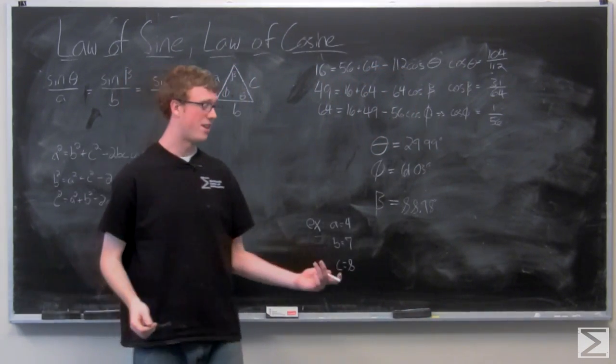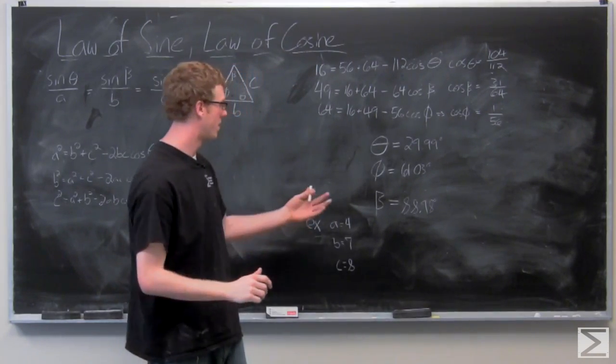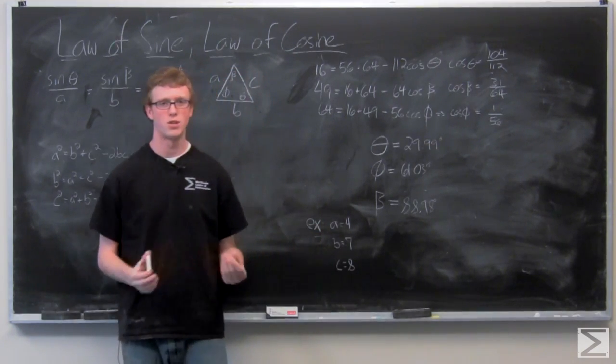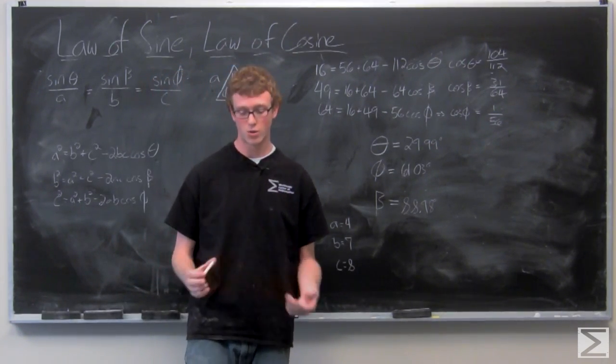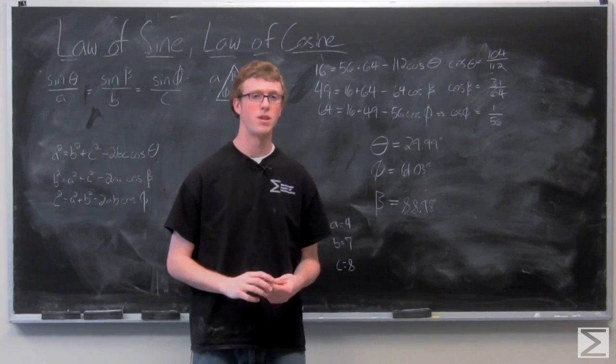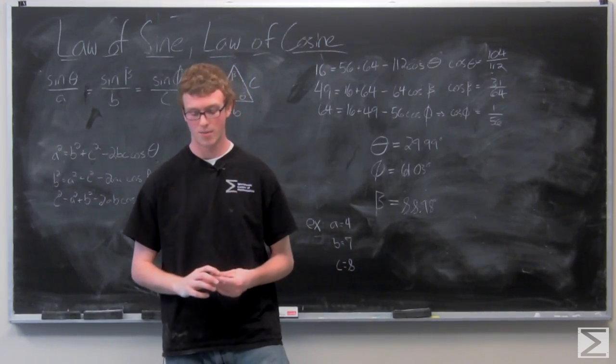So you could have used the law of sines in order to solve this because we do have all acute angles. But just in order to be careful and make sure that we're coming up with the correct answer, we use the law of cosines. Either one can be used, and when you're given three pieces of a triangle, you can find the other measures of the triangle.